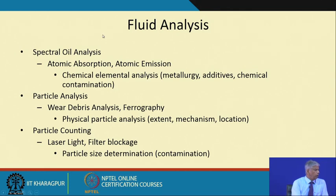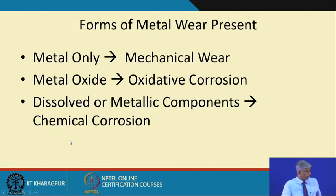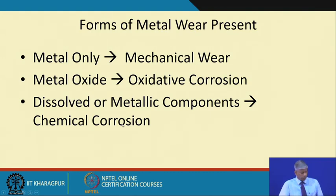The fluid or oil analysis can include: chemical element analysis by atomic absorption spectrophotometry or atomic emission spectrophotometry; particle analysis by wear debris analysis and ferrography looking under the microscope; and particle counting by laser light or a filter for high particle sizes. If the particle is a metal, it indicates mechanical wear. If it is an oxide, it indicates corrosion. If there are dissolved metal components, it indicates chemical corrosion.